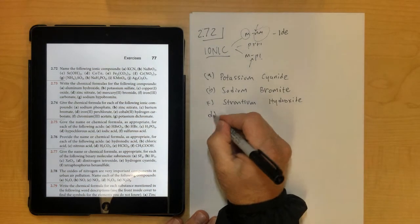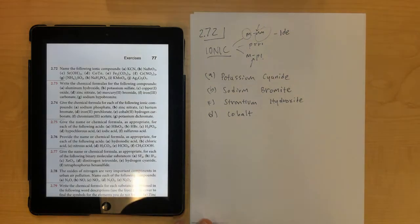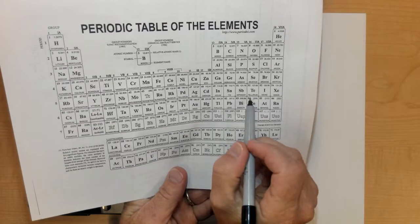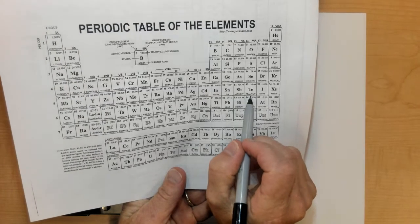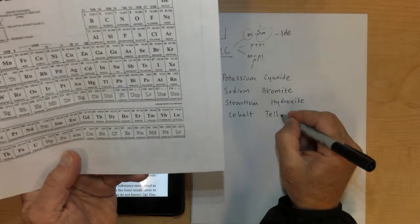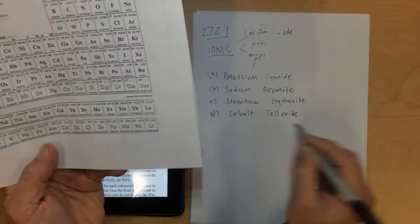Letter D, cobalt. And then Te is an element over here that's called tellurium, and since it's a binary one, only two kinds of metal and a nonmetal, it would be called telluride, and now you're going to need a Roman numeral in there because cobalt is not in group 1 or group 2.